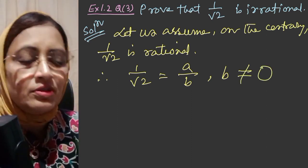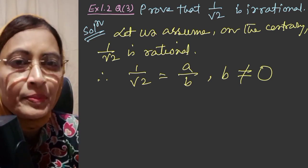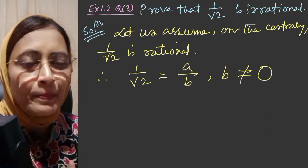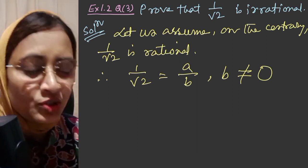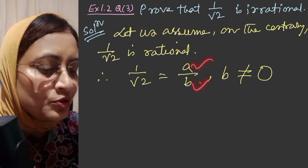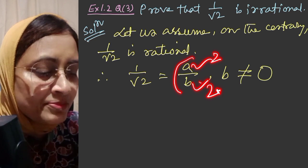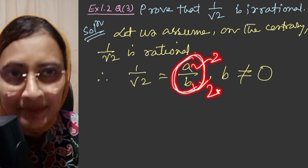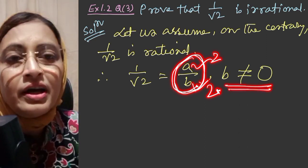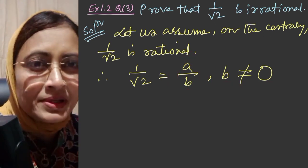We write 1 by root 2 as A by B in lowest terms, where A and B are integers and B is not equal to zero, and A and B are coprime numbers. If there is a common factor, we can divide it into coprime form, meaning there is no common factor between them. So A and B are integers, B not equal to zero, and A and B are coprime.